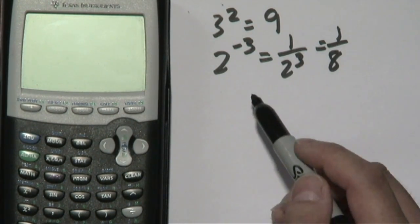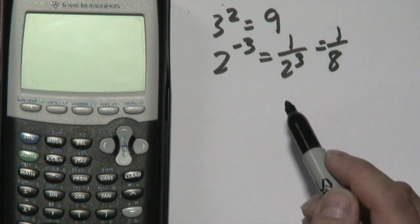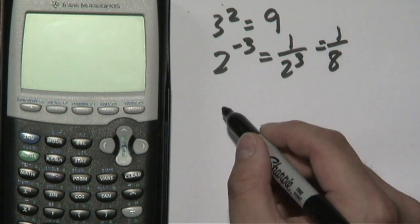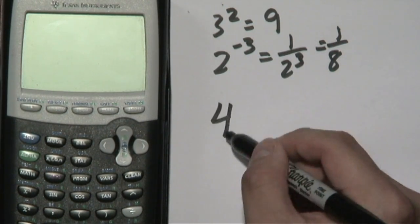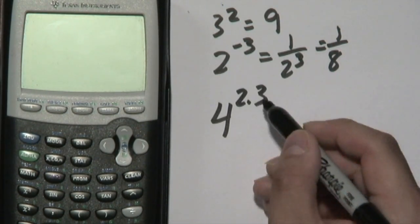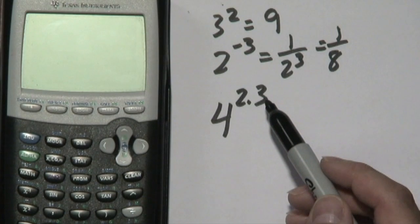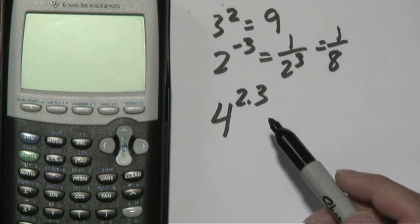But what happens when you have exponents that are just that, decimals, non-integers? Suppose you want to find out four to the 2.3. That's a little difficult to kind of figure out in your head or by hand, so that's where the calculator comes in.